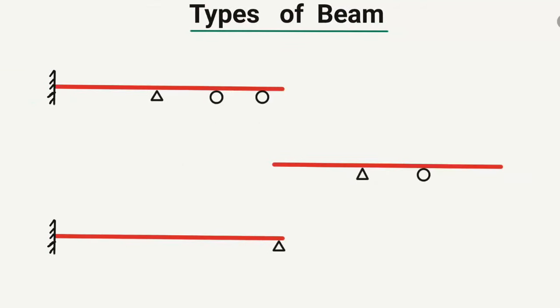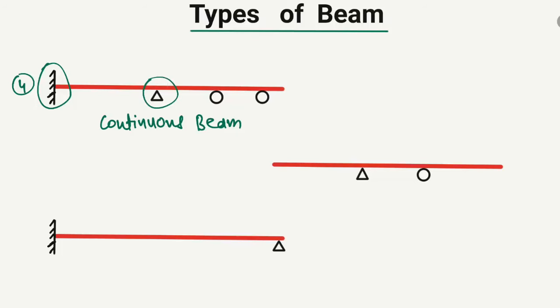The fourth type of beam is known as the continuous beam. It is called a continuous beam because there are more than two supports provided. You can see here a fixed support, then a hinge support, then a roller support, then again a roller support. When there are more than two supports provided in the beam, it is known as a continuous beam.